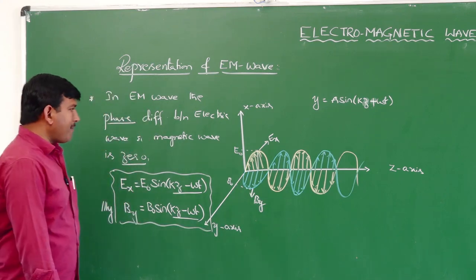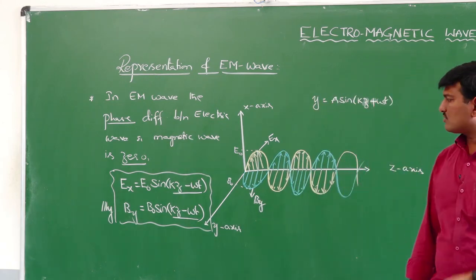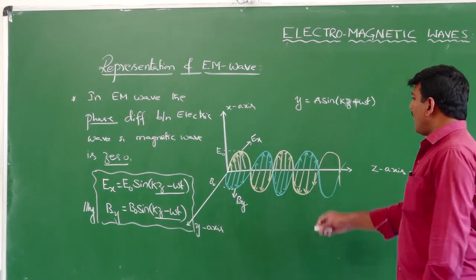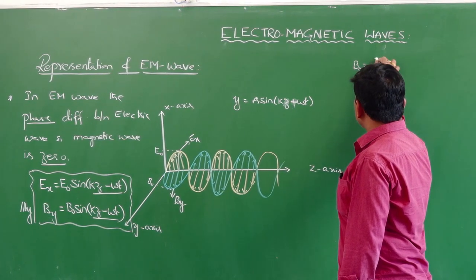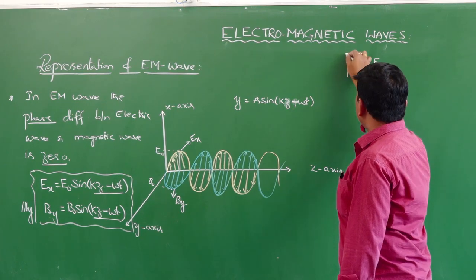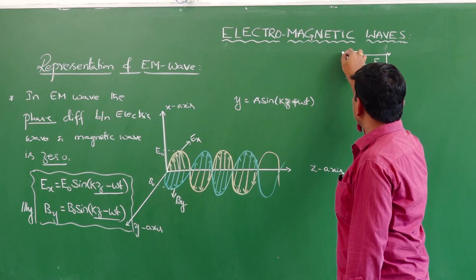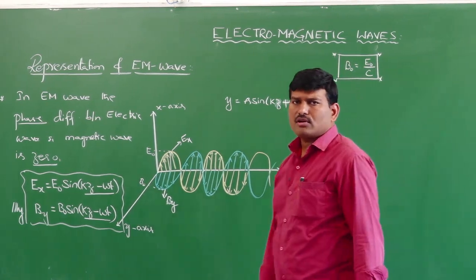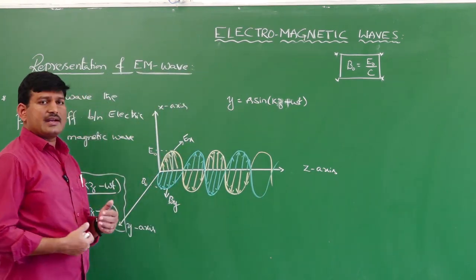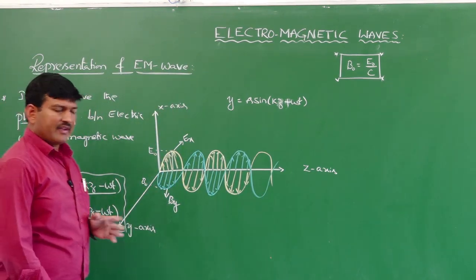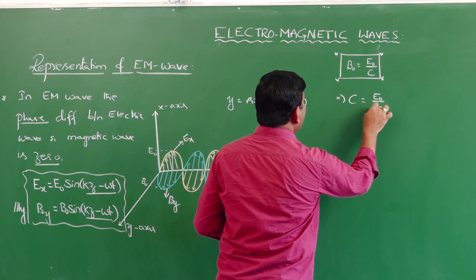Maxwell established a relationship between the speed of light and the peak values of the electric field and magnetic field: B₀ = E₀/c. This is a very important relation for solving problems. We can also write it as c = E₀/B₀.